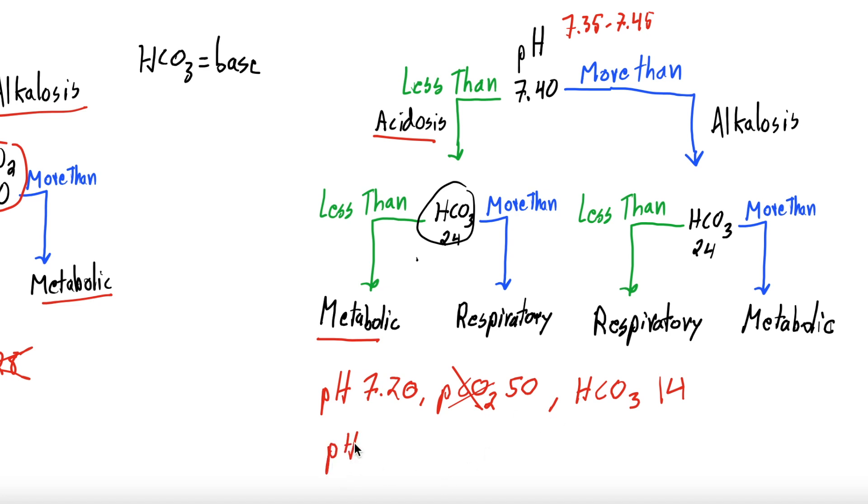Whereas if your pH is 7.20, your PCO2 is 70, and your bicarb is let's call it 30, you still go down the same chart. pH 7.40, 7.2 is less than, so it's an acidosis. Your bicarb is 30, so it's more than 24, so it's respiratory, because the amount of base is high but the pH is still low, meaning your bicarb is compensating for primary respiratory acidosis. And again, we'll get into that more.